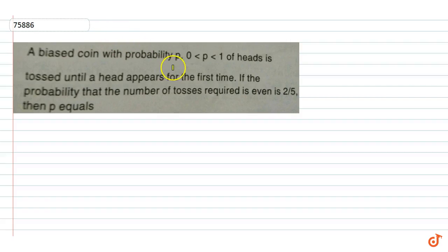A biased coin with probability p, which is between 0 to 1 of heads, is tossed until a head appears for the first time. The probability that the number of tosses required is even is 2 by 5, then p equals. So let's see, probability of head coming, it is equal to p. A coin is biased with probability p of head is tossed.